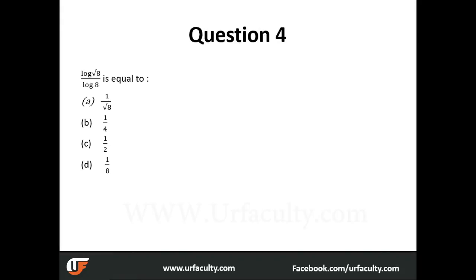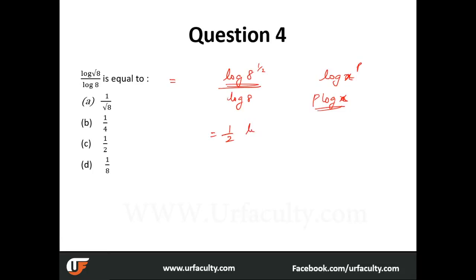Next question: log square root of 8 divided by log 8 equals what? Square root of 8 is 8 to the power of half, so the numerator becomes log 8 to the power of half. Using the property log a to the power of p equals p log a, this becomes half log 8 divided by log 8, which equals half.